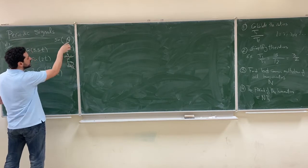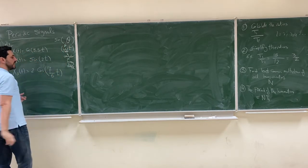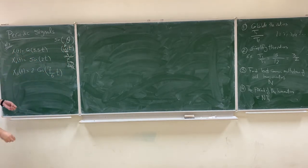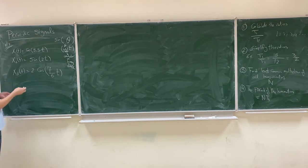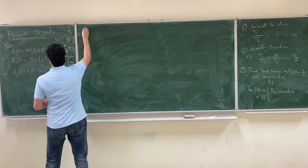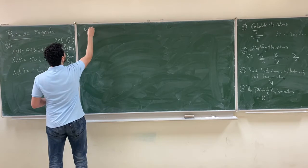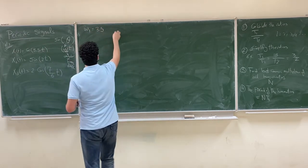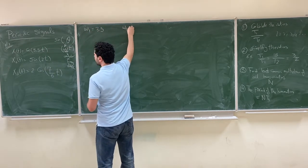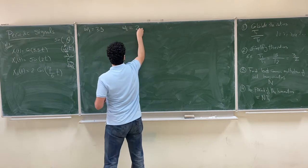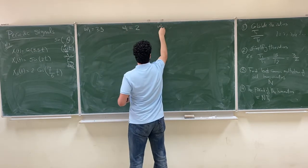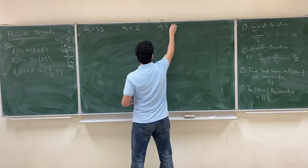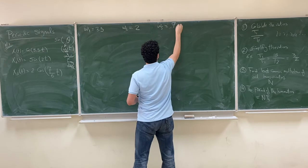When you multiply omega by t, it gives you radians — the angle. So whatever is multiplied by t is the angular frequency. Here, the first angular frequency ω₁ is 3.5, the second ω₂ is 2, and the third angular frequency is 7/6.